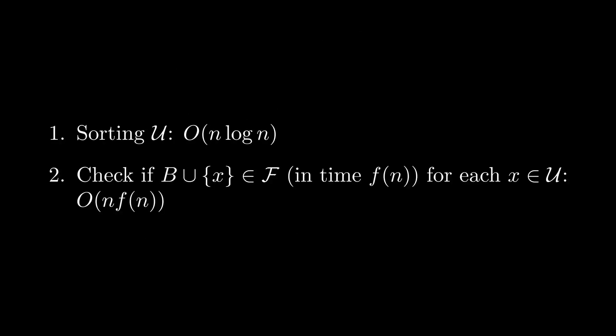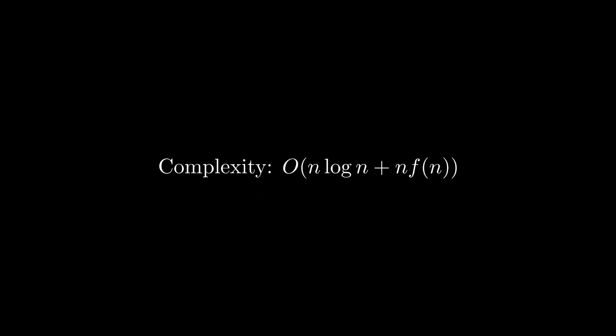Analyzing the runtime of this algorithm, we can see that we have to first sort the elements of u, which if we assume u has n elements, means that this step has complexity O of n log n. Afterwards, we have to check if b union x is in f for each x in u. Since there are n elements, we have that the complexity of this step is O of n times f of n, where f of m is a function representing the time it takes to check whether set b with size m is an independent set in f. Hence, the overall time complexity is O of n log n plus n times f of n.